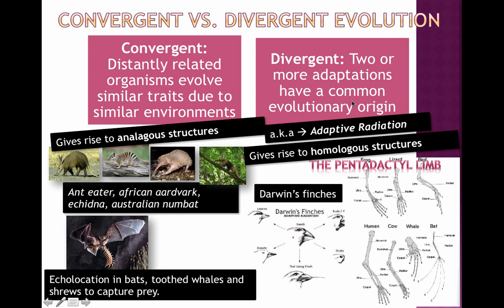Divergent evolution, on the other hand, is where two or more adaptations share a common evolutionary origin — they separate out but retain very similar structures. Another word for this is adaptive radiation, and it gives rise to homologous structures, the most famous of which is the pentadactyl limb. If you look at the five-fingered limb across different animals — human, cow, whale, bat — even a whale's flipper, beneath the surface, shows bone similarities pointing to a shared evolutionary origin. We call those homologous structures.